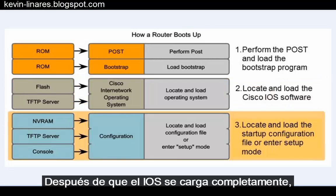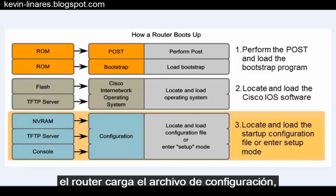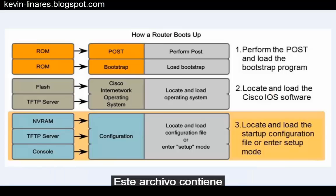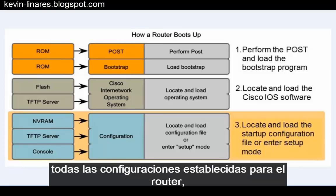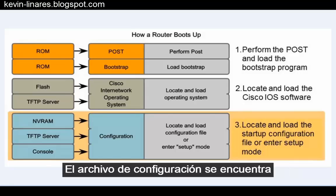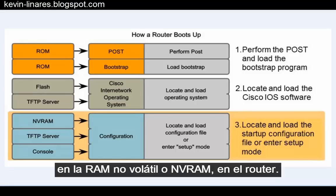After the IOS is completely loaded, the router then loads the configuration file, known as the startup config file. This file contains all of the configured settings for the router, such as the host name and interface IP addresses. The configuration file is located in non-volatile RAM, or NVRAM, in the router.